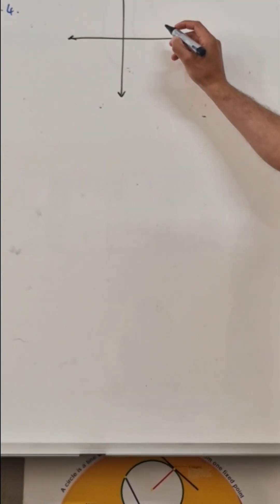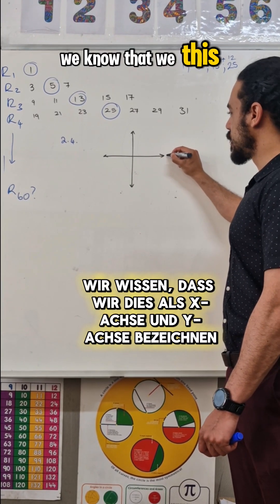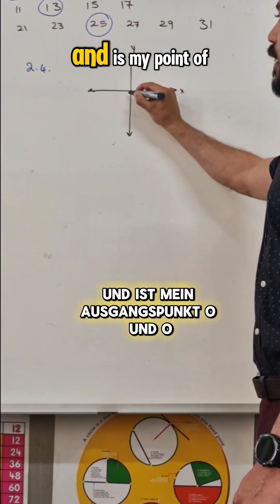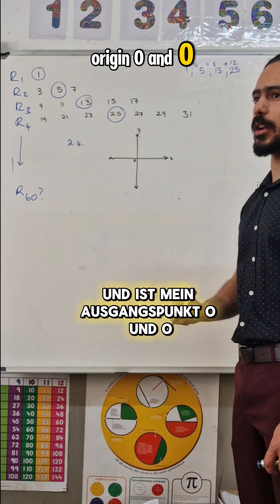90 degrees, alright? So, this is all x-axis and y-axis, and this is my point of origin, 0 and 0.